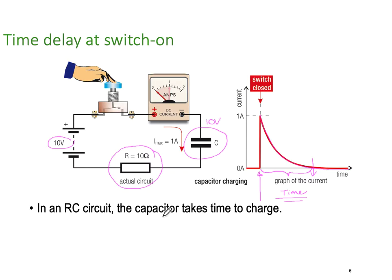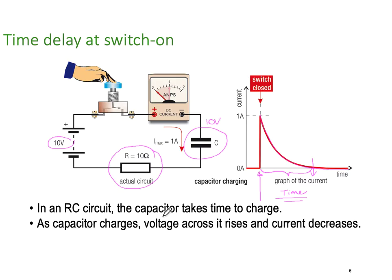In an RC circuit, the capacitor takes time to charge because of the resistor in series — it's not inherent to the capacitor itself. As the capacitor charges, the voltage across the capacitor rises and the current decreases, so voltage and current do the opposite to each other.